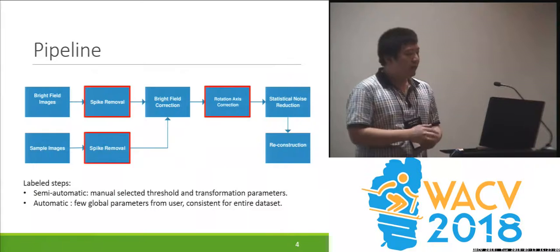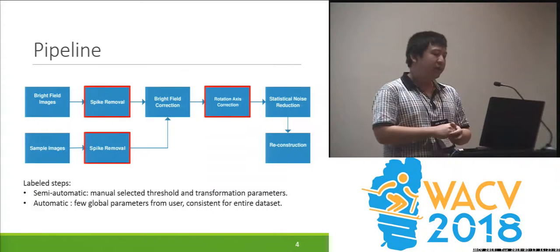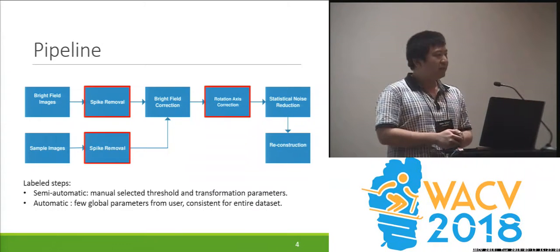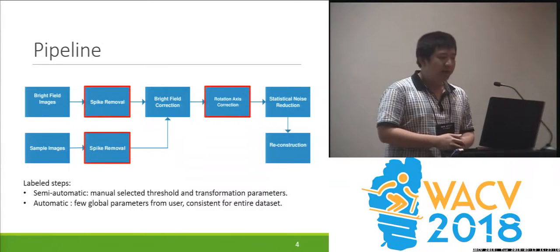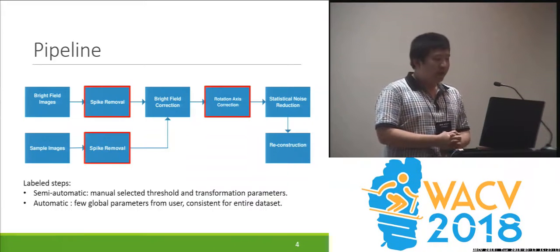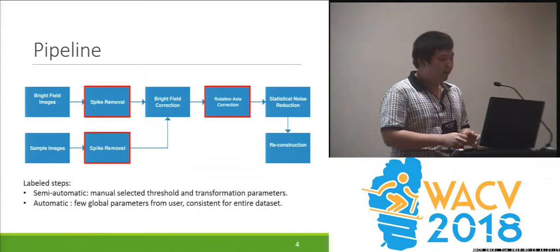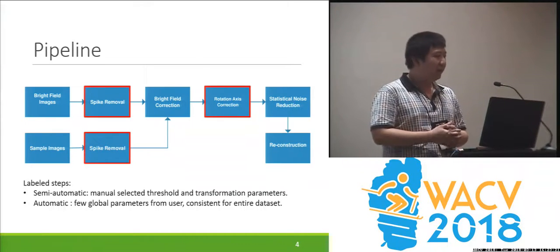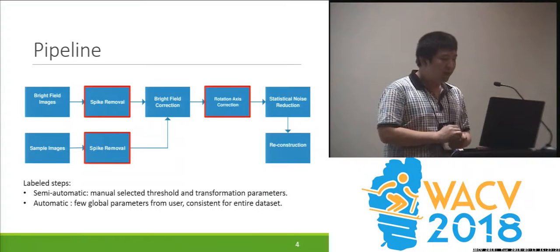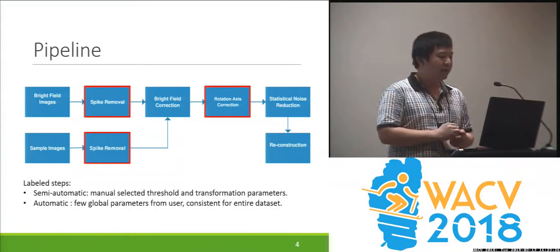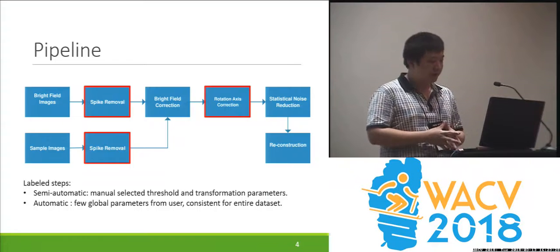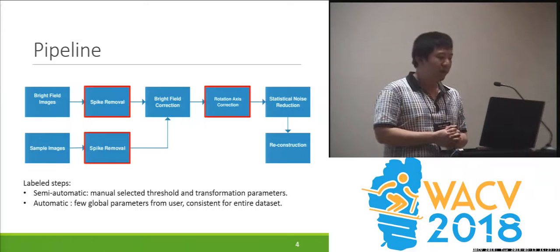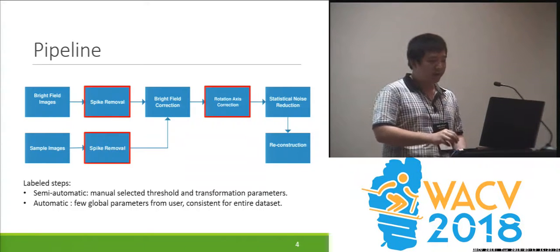We have built a pipeline which contains spike noise removing, contrast enhancing, rotation axis calibration, and statistical noise reduction and reconstruction. The labeled steps were previously semi-automatic, which requires a lot of user-selected thresholding values for each projection image and requires the user to select parameters for transformation metrics. Our automatic approach only requires a few global parameters from the user, which are consistent for the entire dataset.